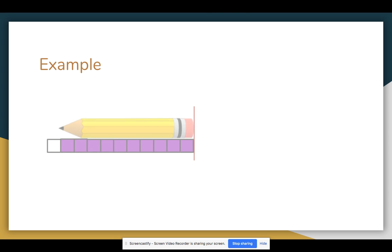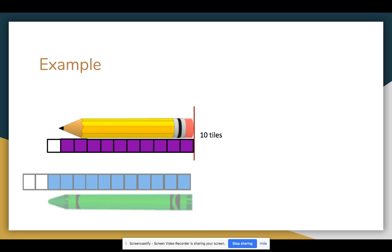So for our example, we have the pencil. We use the colored tiles and we said that the pencil is 10 tiles long. We also have the crayon. The crayon is 11 tiles long.